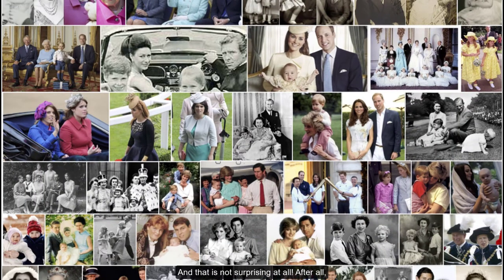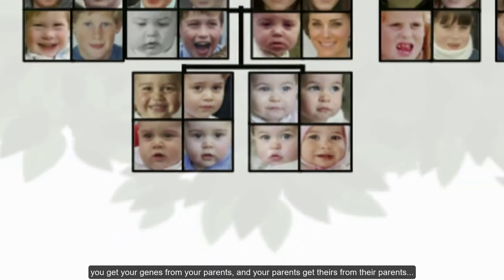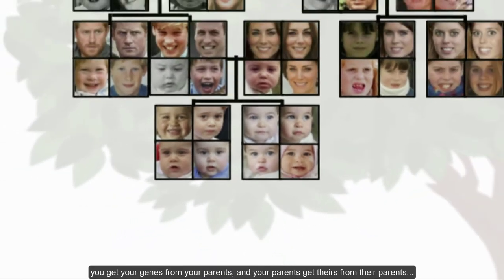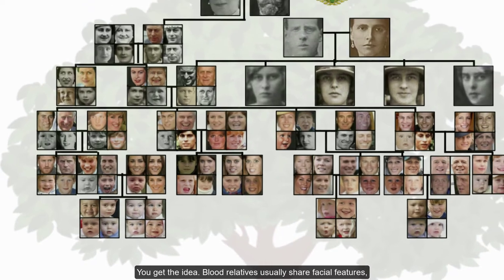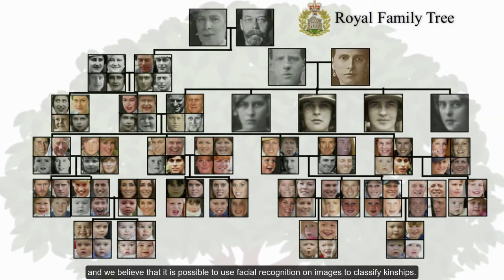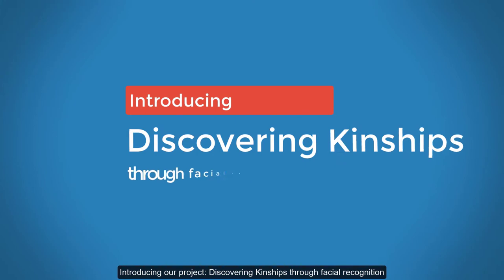And that's not surprising at all. After all, you get your genes from your parents and your parents get theirs from their parents. Blood relatives usually share facial features, and we believe that it is possible to use facial recognition on images to classify kinships. Introducing our project: Discovering Kinships Through Facial Recognition.